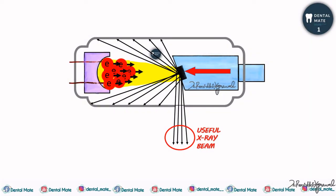We have already seen that x-rays are produced when a voltage difference is created between the cathode and the anode, and when the tungsten filament is heated it produces electrons. If the power supplied to the cathode is supplied for more duration, the filament would be heated for a longer time and there would be an increased number of electrons produced, thereby creating more x-ray photons.